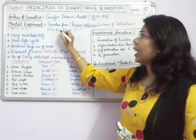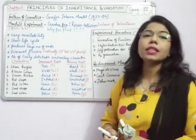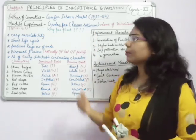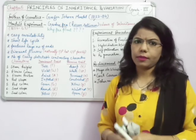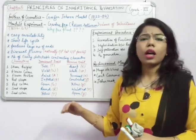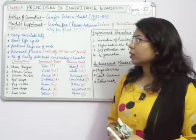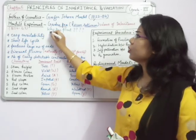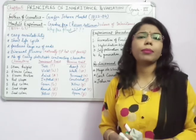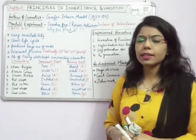After returning, Mendel did his experiments on pea plant — garden pea, scientific name Pisum sativum — in his garden. He worked on pea plants for several generations and came to understand how characters are passed from parents to subsequent offspring. A key question arises: why did he choose the pea plant?